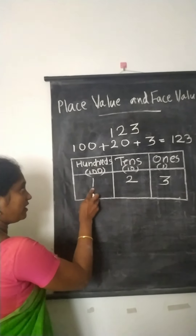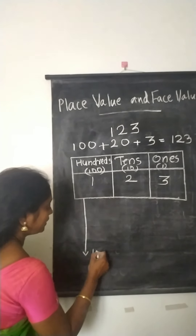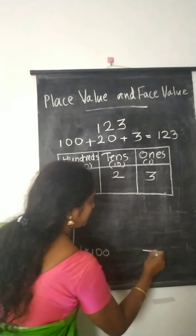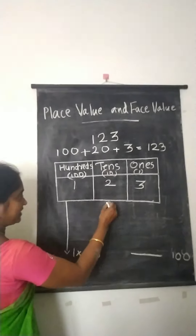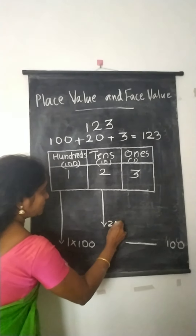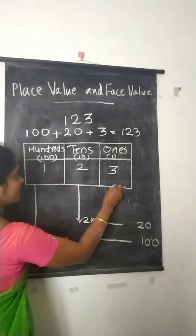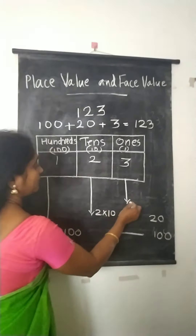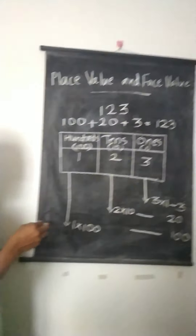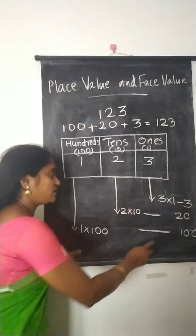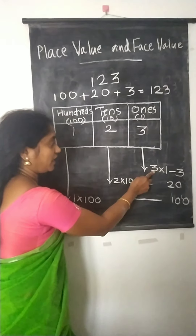As 1 lies in the 100's place, the place value of 1 is 1 into 100, that is 100. As 2 lies in the 10's place, its place value is 2 into 10, that is 20. As 3 lies in the 1's place, the place value of 3 is 3 into 1, that is 3. So the place value of 1 is 100, place value of 2 is 20, and place value of 3 is 3.